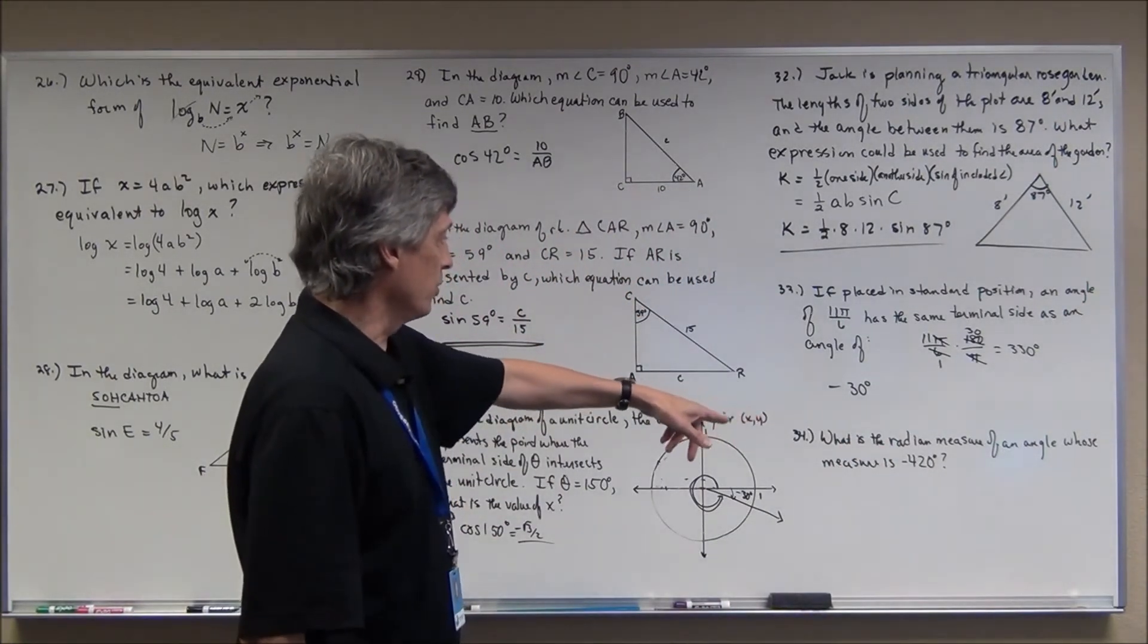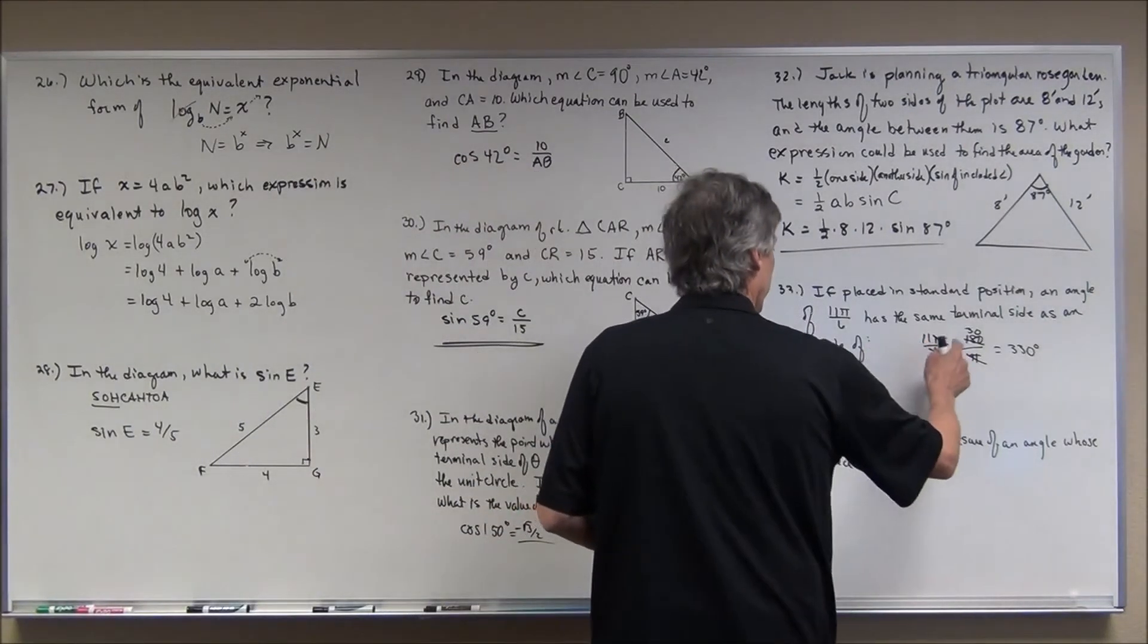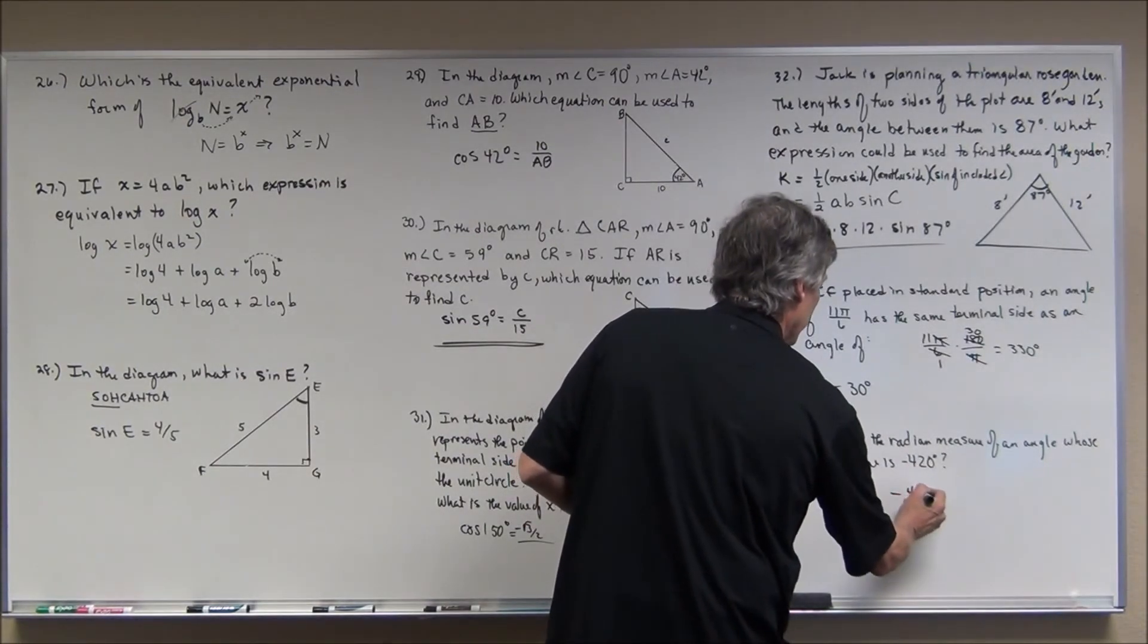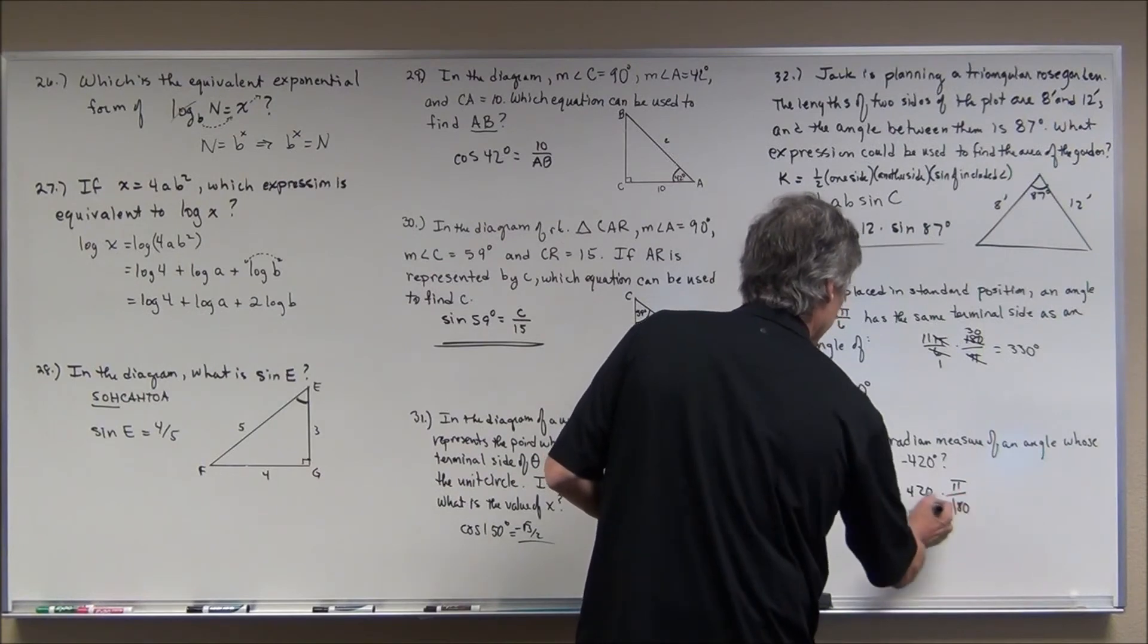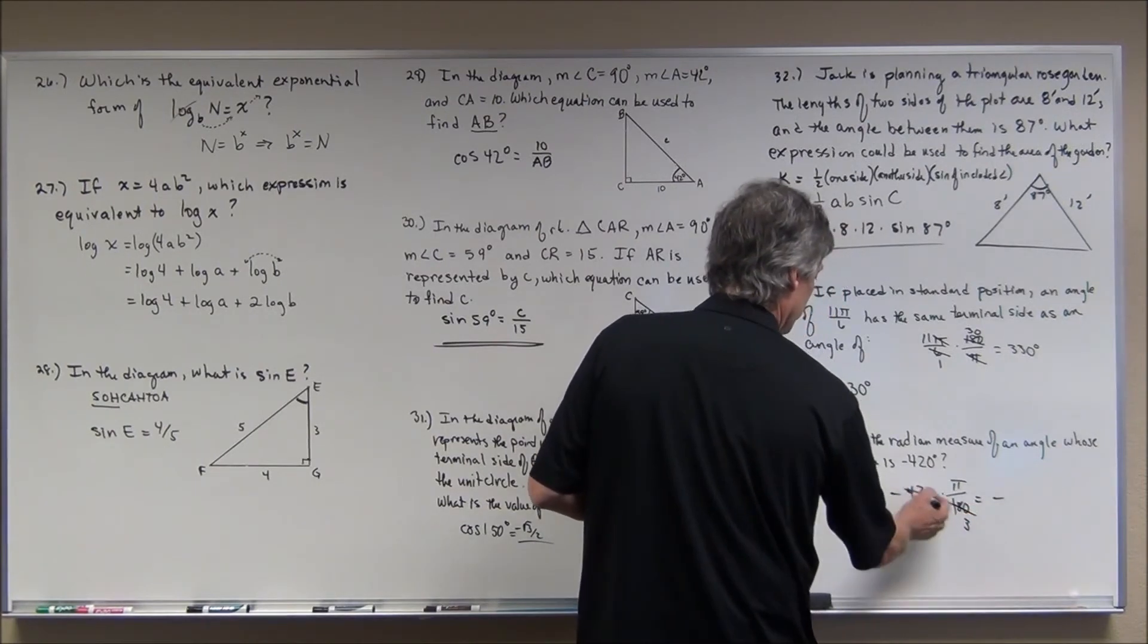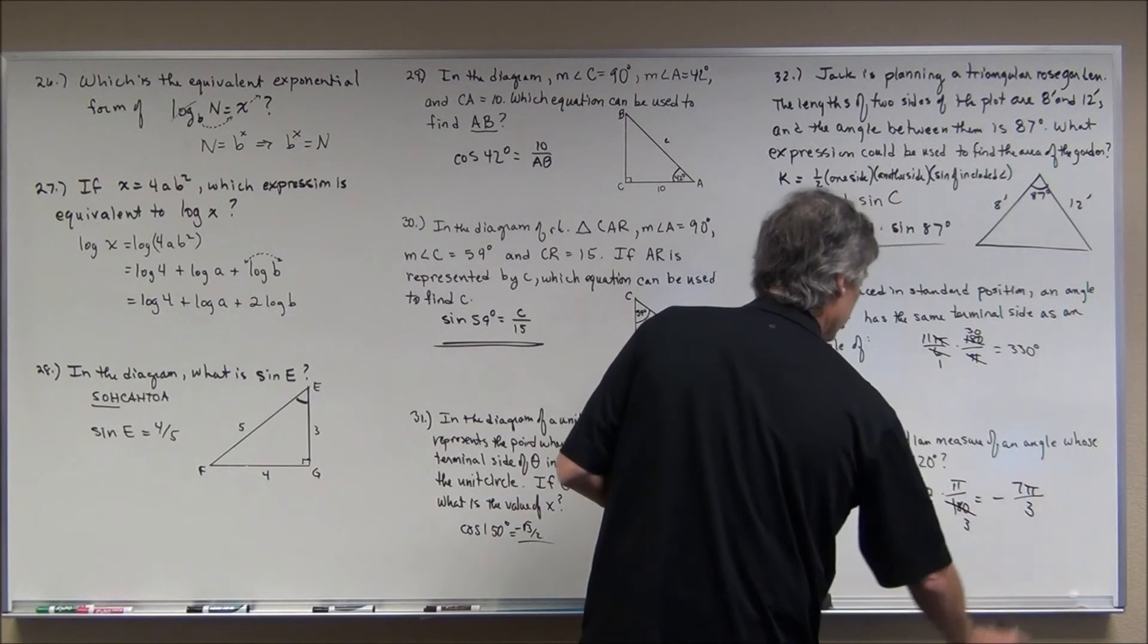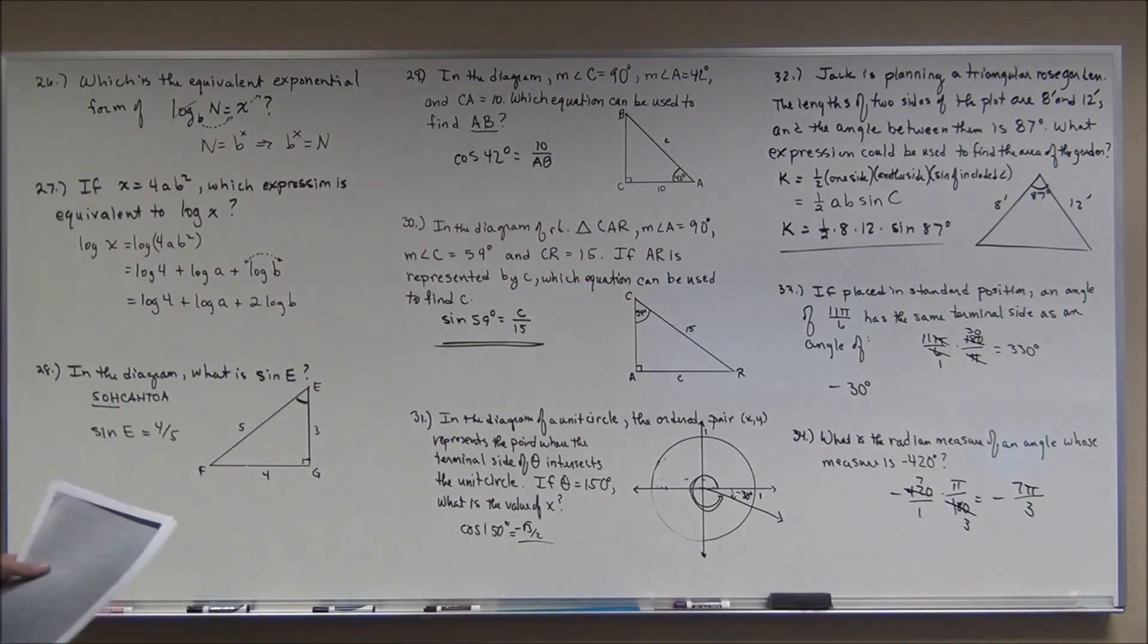What's the radian measure of an angle whose measure is negative 420 degrees? Well, I just converted radians to degrees by multiplying by 180 over pi to change degrees into radians. You multiply by pi over 180. Now, I have a negative times a positive, so that's going to be negative. 60 goes in there three times. 60 goes in there seven, so it's negative 7 pi over 3. And that's the answer to number 34. So we're getting there. Almost done with the multiple choice.